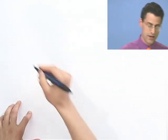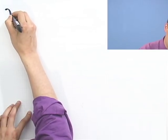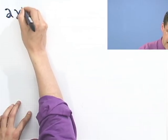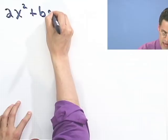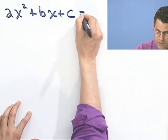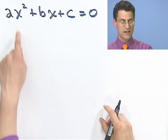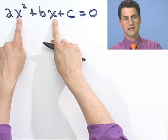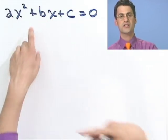So I'm going to write down a generic quadratic equation. It would look like this. It would have an a out in front, ax squared plus bx plus c equals 0. Well, I want you to understand that the variable is x. a, b, and c are some numbers,